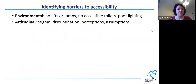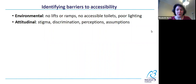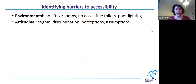Attitudinal barriers are social attitudes towards people with disabilities — for example, stigma, discrimination, perceptions, and assumptions. This could cover a range of things, such as talking to a person with a disability's support person instead of the person with the disability themselves — talking about them as if they weren't there. Avoiding speaking to a person with a disability because you feel awkward, or offering help without asking — just assuming that a disabled person isn't going to be able to do something and doing it for them. Those could all be examples of attitudinal barriers.